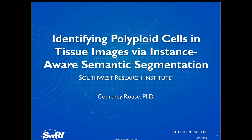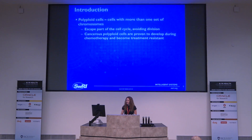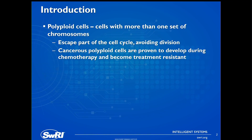Today I'll be presenting on identifying polyploid cells in tissue images via instance-aware semantic segmentation. A polyploid cell is a cell with more than one set of chromosomes, meaning that it has some extra DNA. A cell may become polyploid when it escapes part of the cell cycle and avoids division.